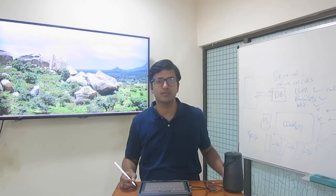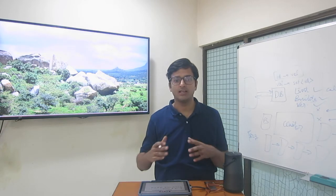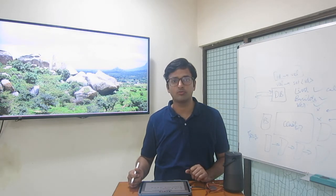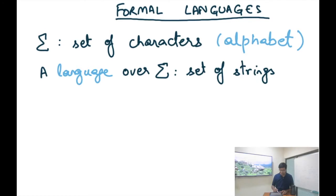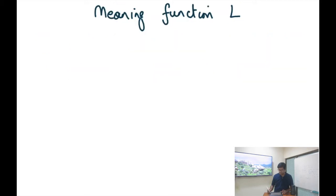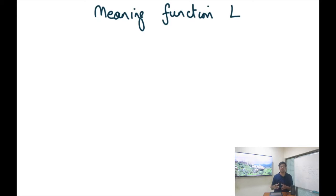Last time we talked about regular expressions and regular languages, which fall under the category of formal languages. To review: if sigma is a set of characters — also called an alphabet — then a language over sigma is a set of strings, and every language is associated with a meaning function. We saw that each regular expression represented a set of strings, also called a regular language.